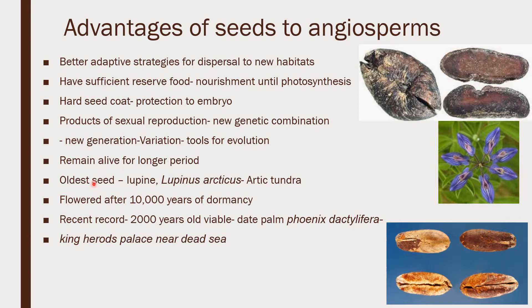The oldest seed is found to be Lupinus arcticus, found in the arctic tundra region, and it flowered after 10,000 years of dormancy. Even a recent record has been found — a 2000-year-old viable seed of the date palm Phoenix dactylifera, found in King Herod's palace near the Dead Sea. These are some of the advantages of seeds to angiosperms.